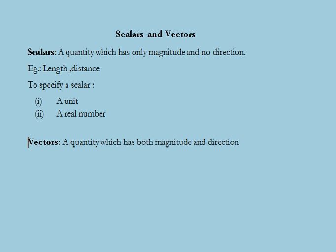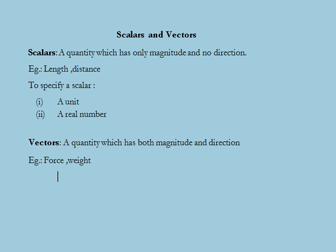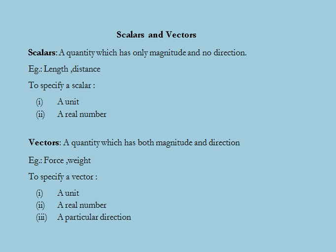Next we are going to discuss vectors, which are quantities that have magnitude as well as direction. Examples of vectors are force, weight, velocity, etc. In order to specify a vector, three things are needed: a unit in terms of which it is measured, a real number, and a particular direction. Next we are going to find out how we can represent a given vector.